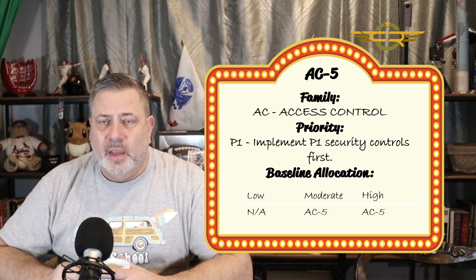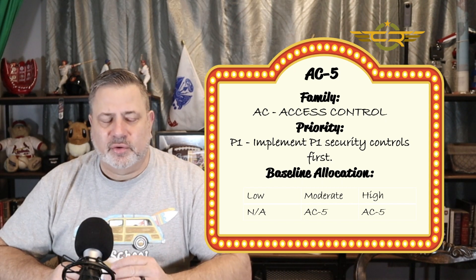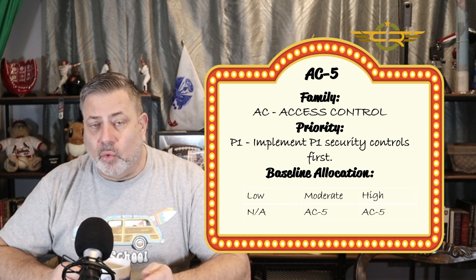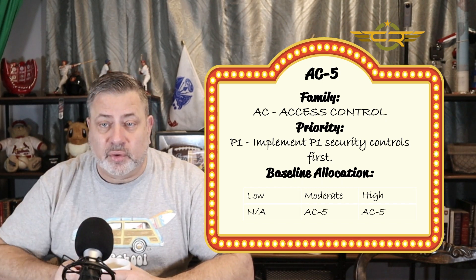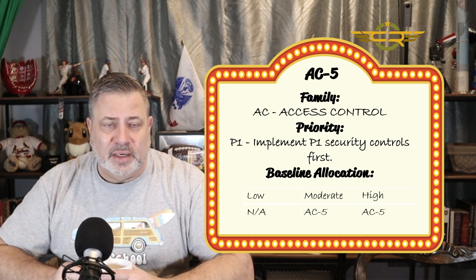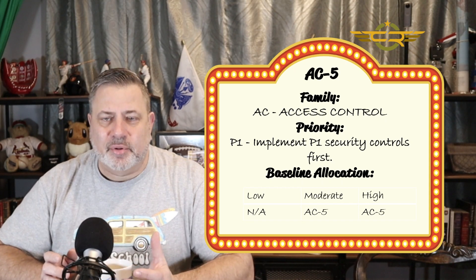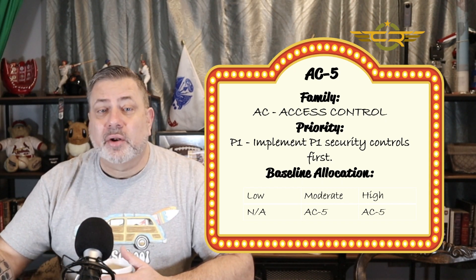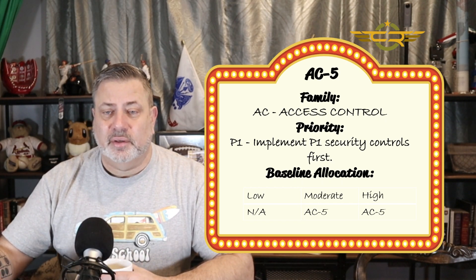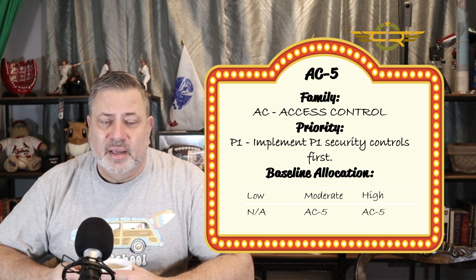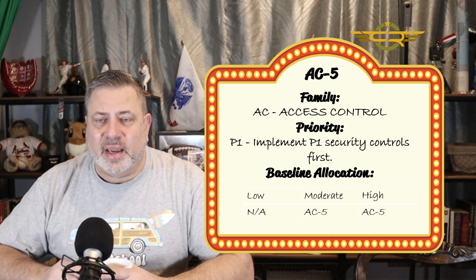The family is AC — the access control family. This is a P1 implementation, which doesn't mean criticality; it just means in the order of implementing controls we do P1s first, then P2s, P3s, and P0s as a logical progression — not that this is more important than a P2 control. If we're building a baseline according to NIST, AC5 is not applicable at the low baseline, though we could always add it in through our tailoring process. At the moderate level we implement AC5 as written, with no enhancements, and at the high baseline we implement it as well.